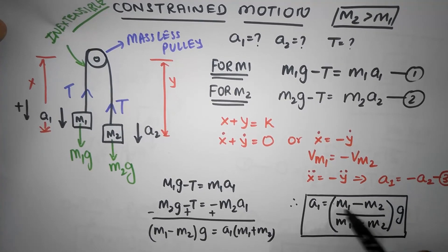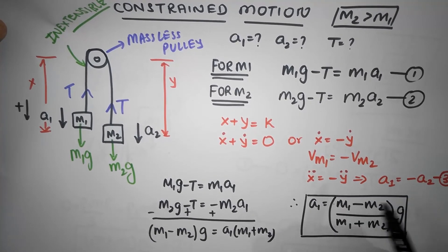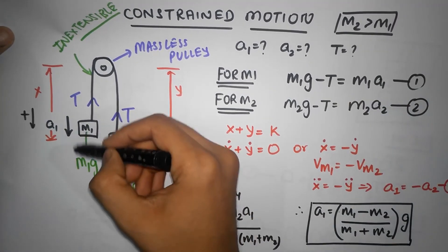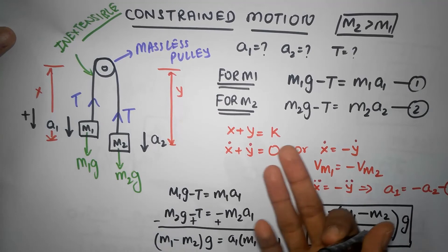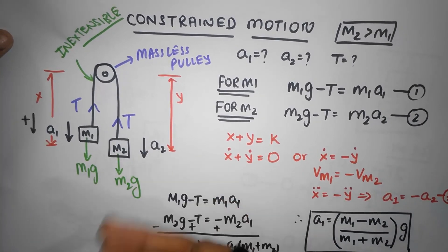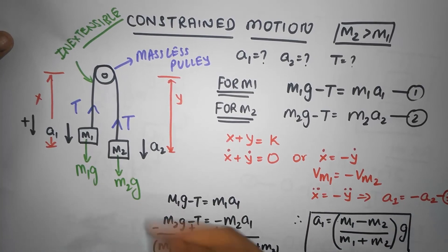On the other hand, if M2 is greater than M1, that is M1 is smaller than M2, then acceleration will be negative. This is a negative number. And that also makes sense because if M2 is greater than M1, which is the case over here, then M1 will accelerate up. See what I told you?